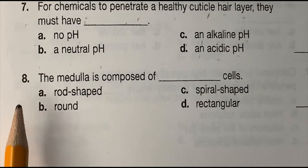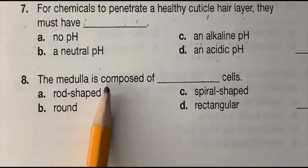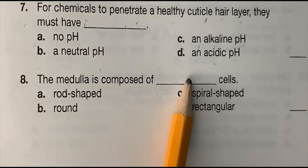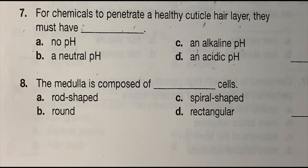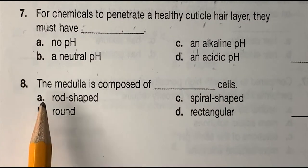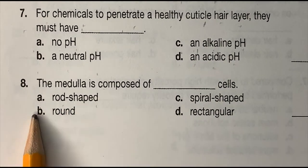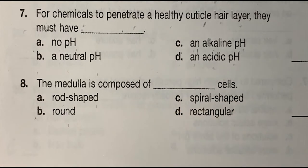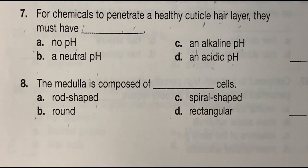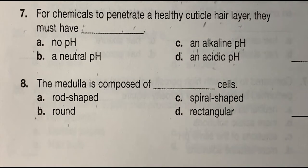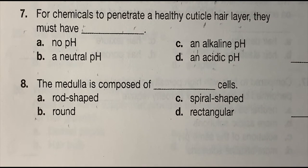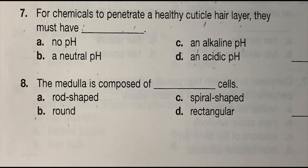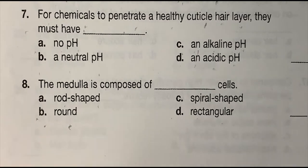Number eight: the medulla is composed of blank cells — (a) rod-shaped, (b) round, (c) arrow-shaped, or (d) rectangular. The correct answer is (b) round.